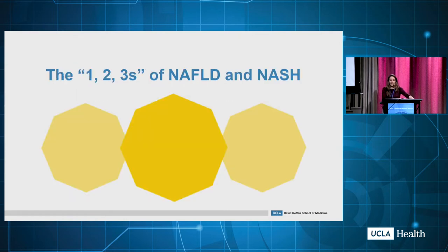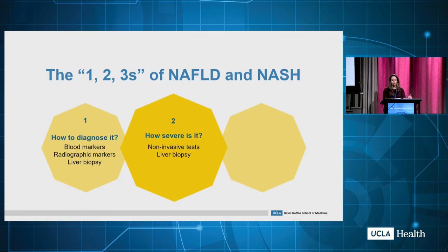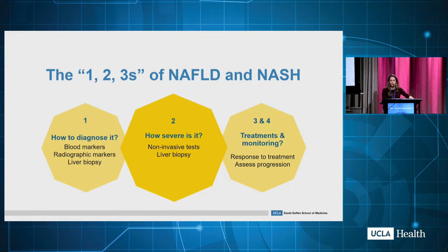When I approach a patient with NAFLD or NASH, I'd like to think of them in three or four different categories. The first is how do you actually make the diagnosis — do you have blood biomarkers or radiographic markers, and when do you consider liver biopsy? The second, and perhaps most important, is staging the degree of fibrosis. Every gastroenterologist and hepatologist who sees a NAFLD patient should be able to answer that question. And finally, categories three and four — treatment and monitoring. There are ongoing clinical trials looking at many medications for the treatment of NASH, but as of now, none have been FDA approved.